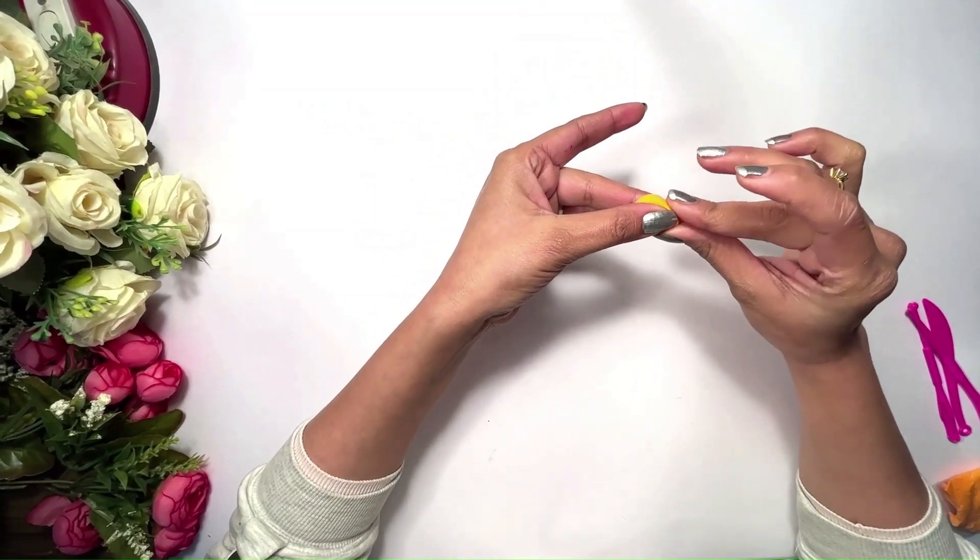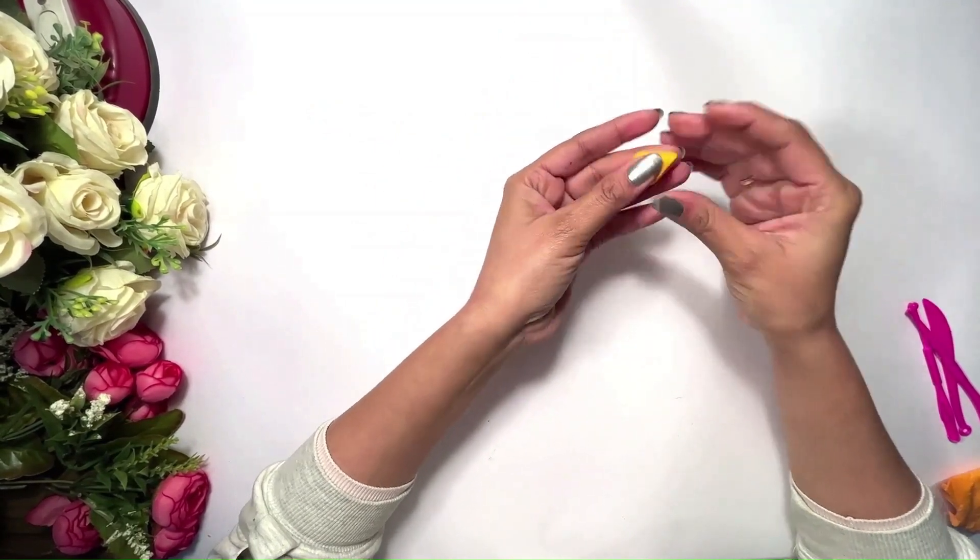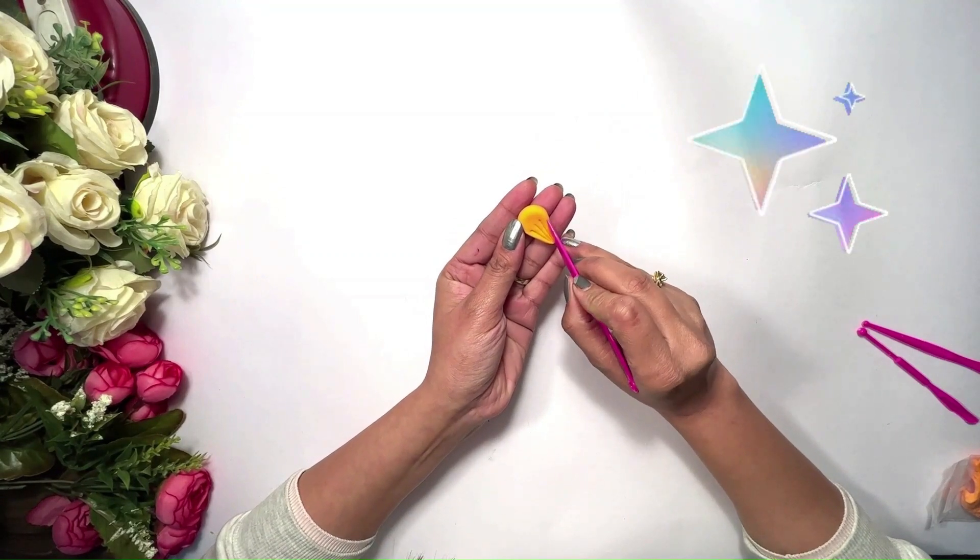Roll a ball of orange clay, then form a tear drop shape or the shape of a flower petal.